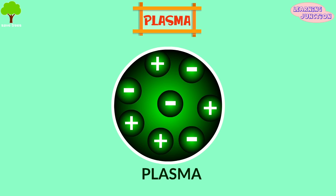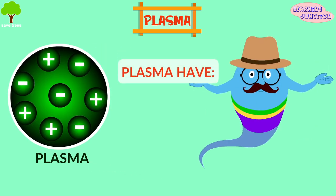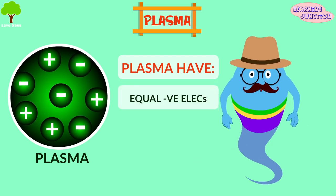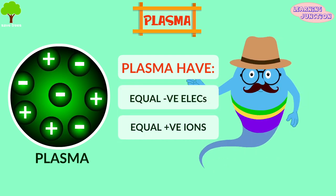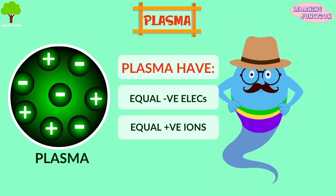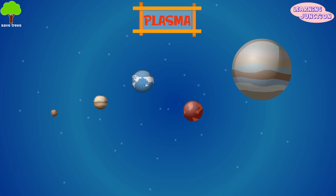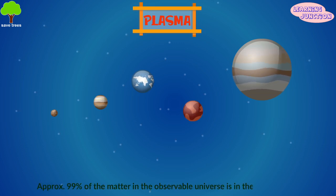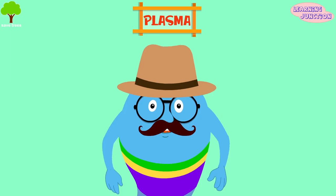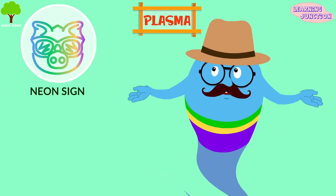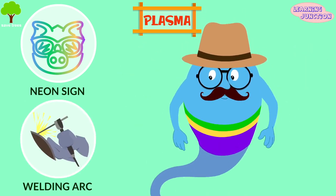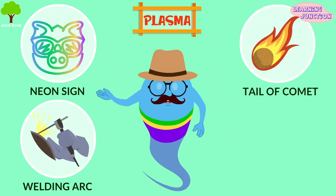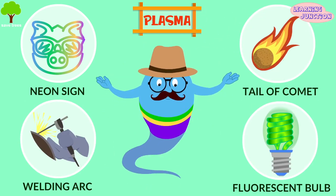Plasma. A plasma is a warm ionized gas consisting of almost equivalent numbers of negatively charged electrons and positively charged ions. It is estimated that approximately 99 percent of the matter in the observable universe is in the plasma state. Some examples include neon signs, welding arcs, the tail of a comet, and fluorescent lights.